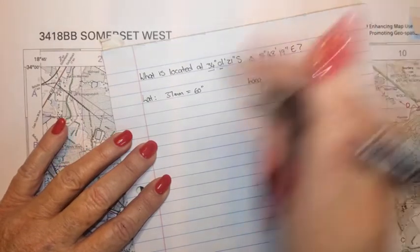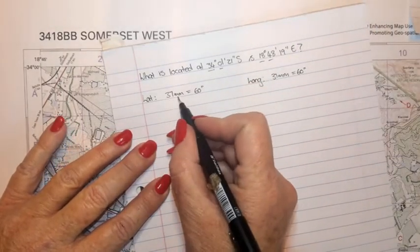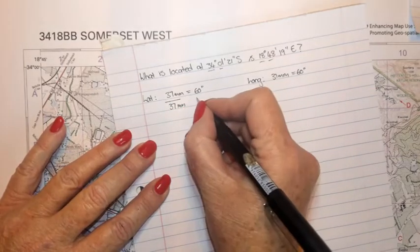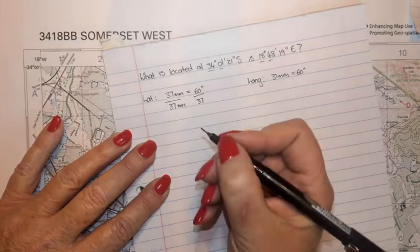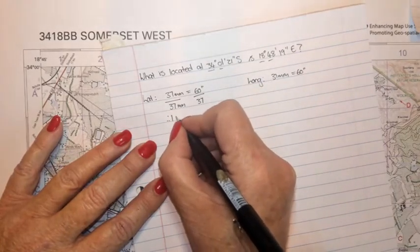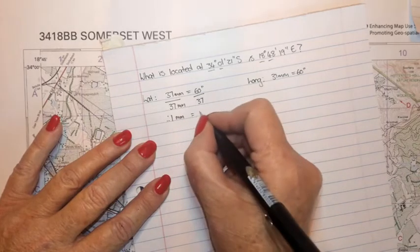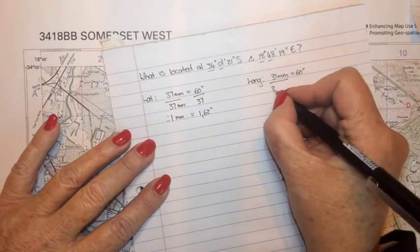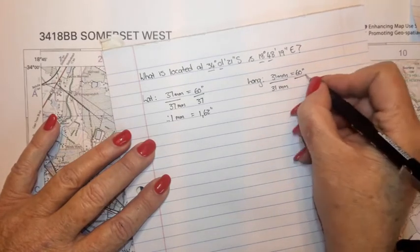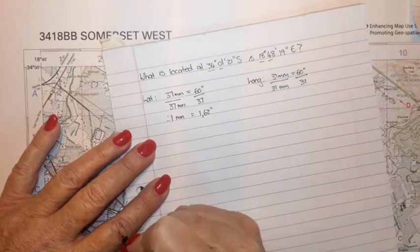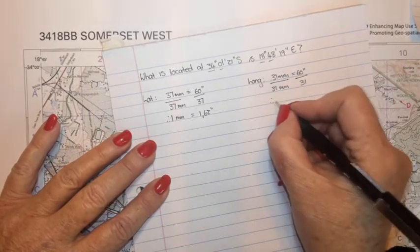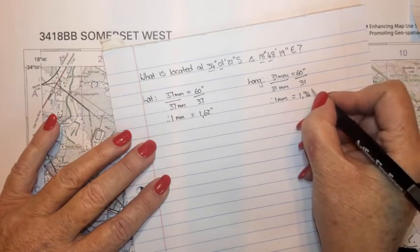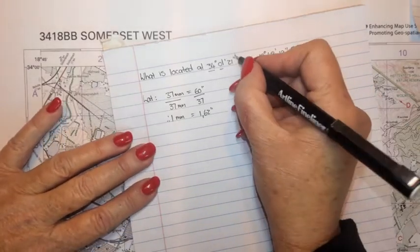We're not interested in 37 millimeters but in one millimeter, so to get to one millimeter I divide by 37 on both sides, giving us 1 millimeter equals 1.62 seconds. The same for longitude — I'm not interested in 31 millimeters, I want one millimeter, so I divide by 31 on both sides and I get 1 millimeter equals 1.94 seconds.